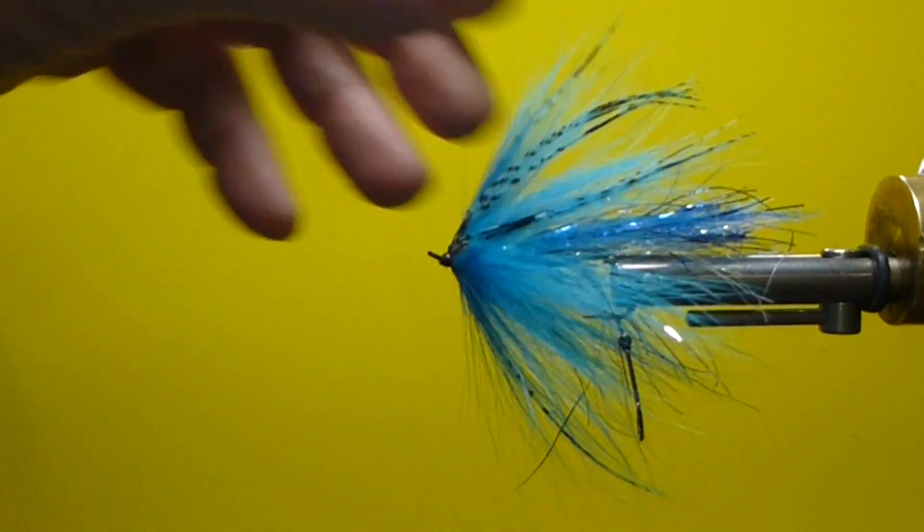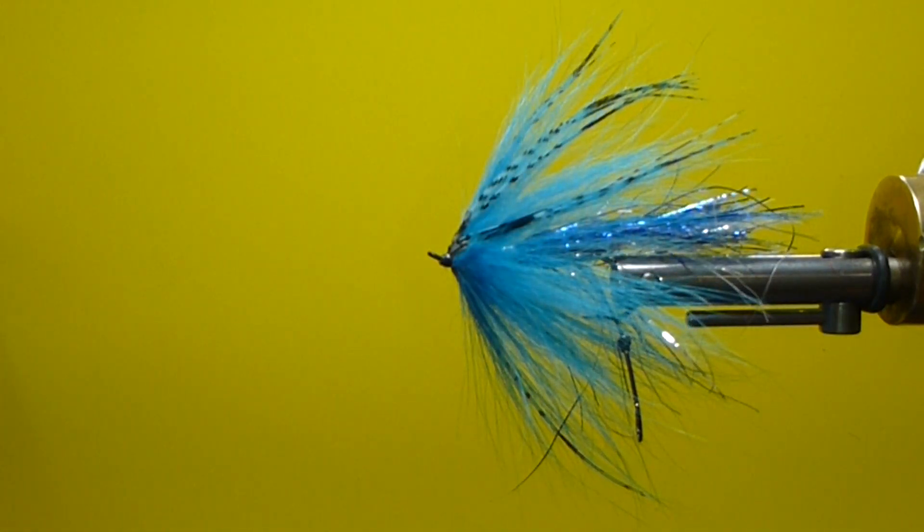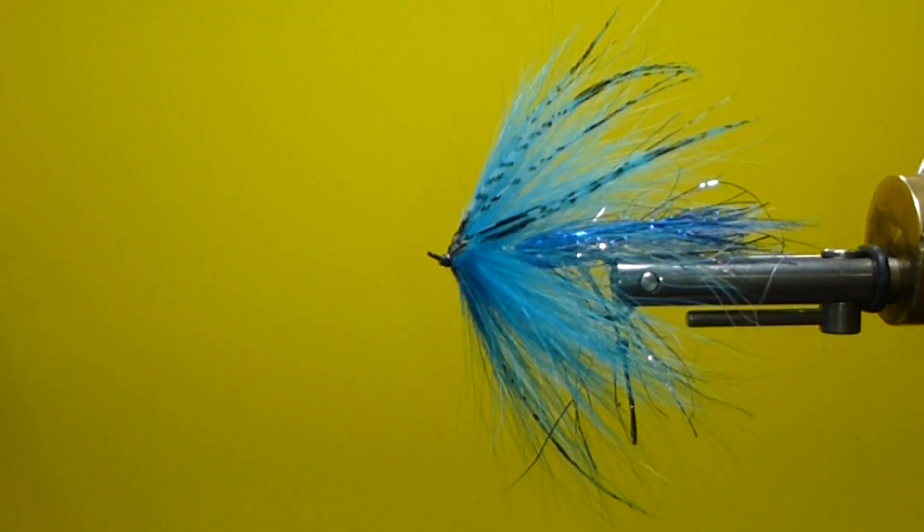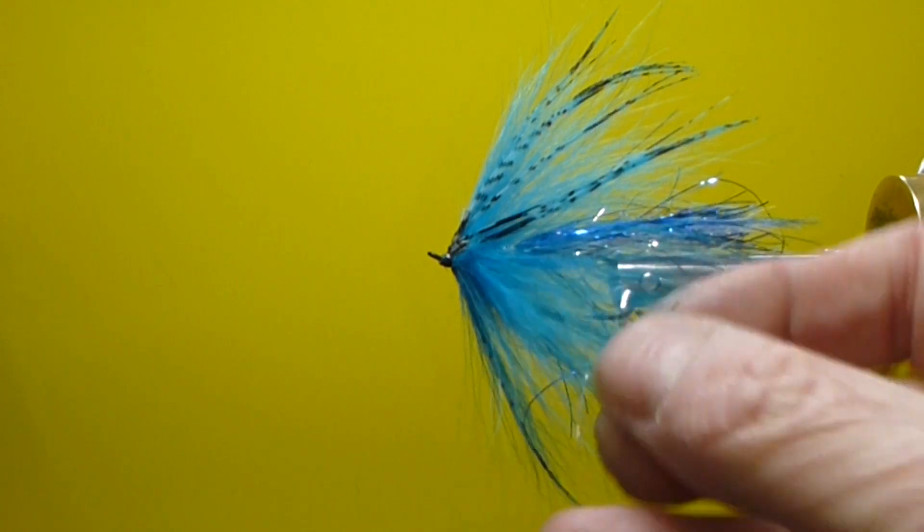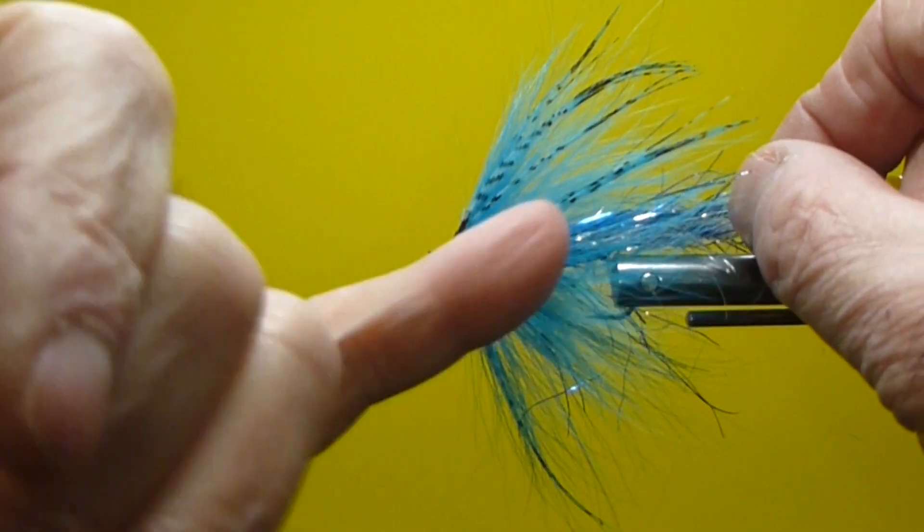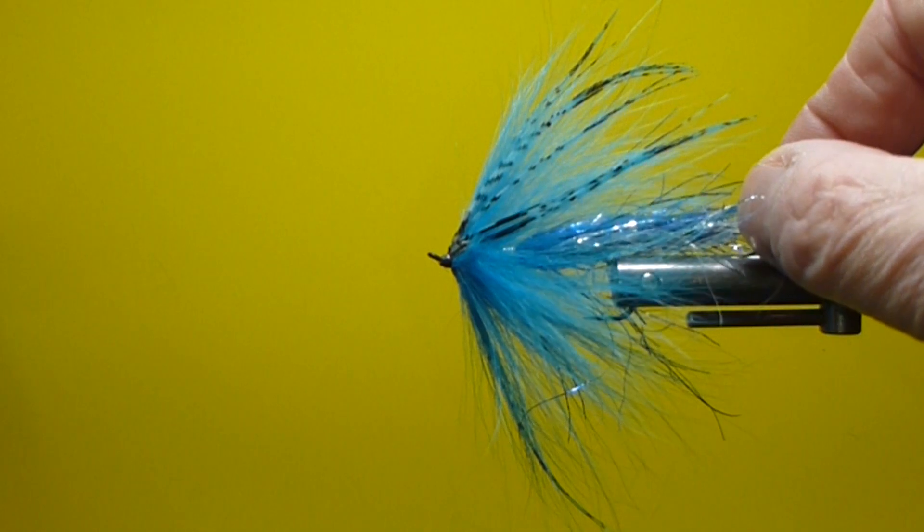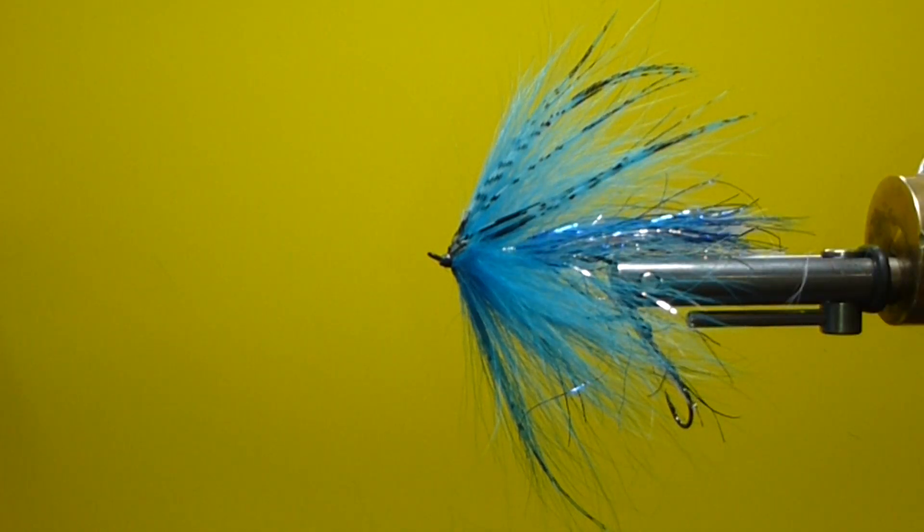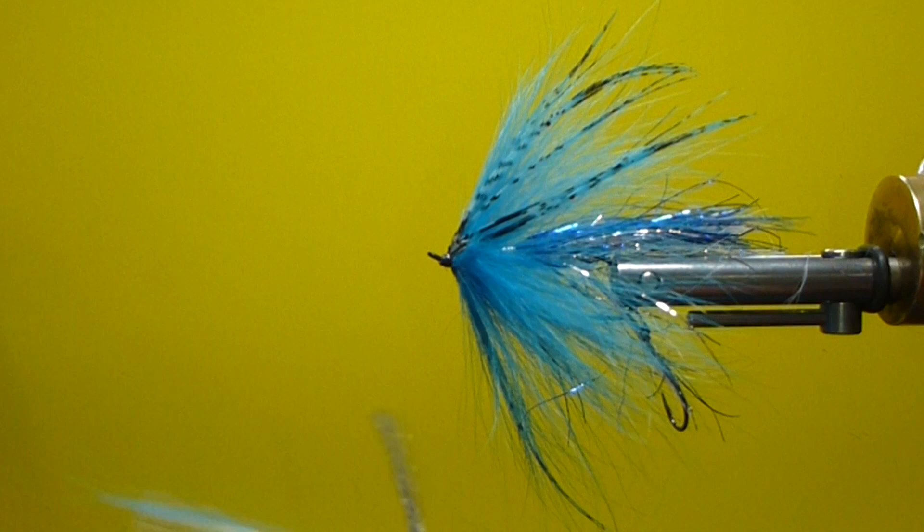You'll notice the fox are standing out very nice. It's going to really breathe well in the water. It's got the stinger hook back here. I'll cut the lead hook off when I'm done tying. So, let's go over the materials we need to tie this fly.